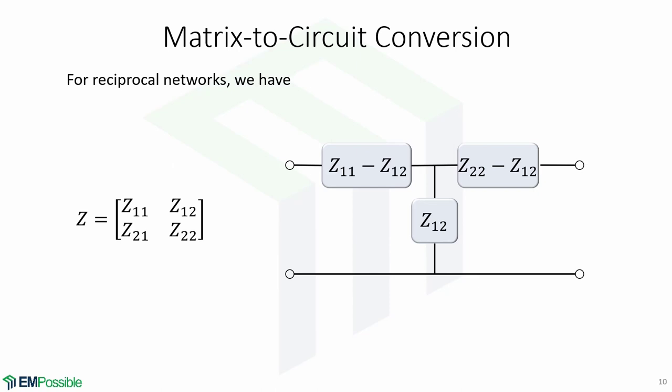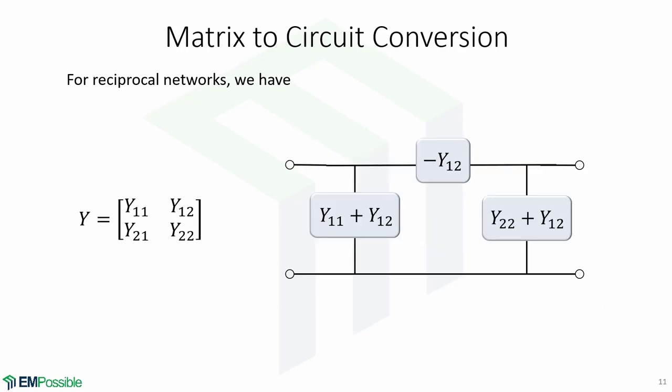Now we will learn how to do matrix to circuit conversion. For reciprocal networks it is very easy. If we have this impedance matrix then the equivalent circuit will be given by this T network. If we have an admittance matrix then the equivalent circuit will be equal to this pi network.